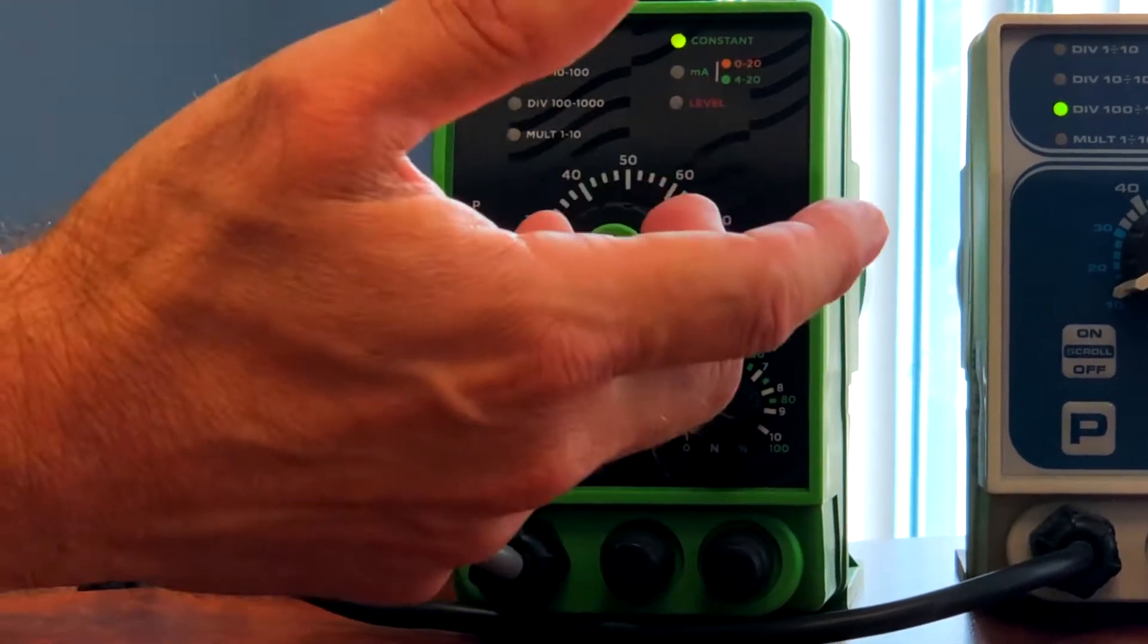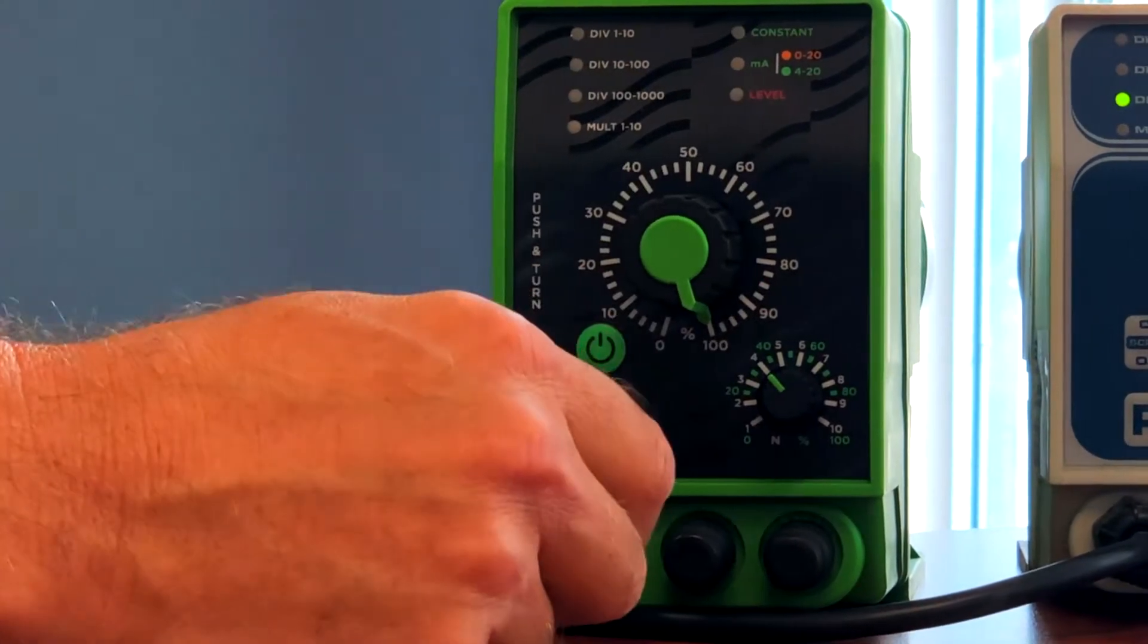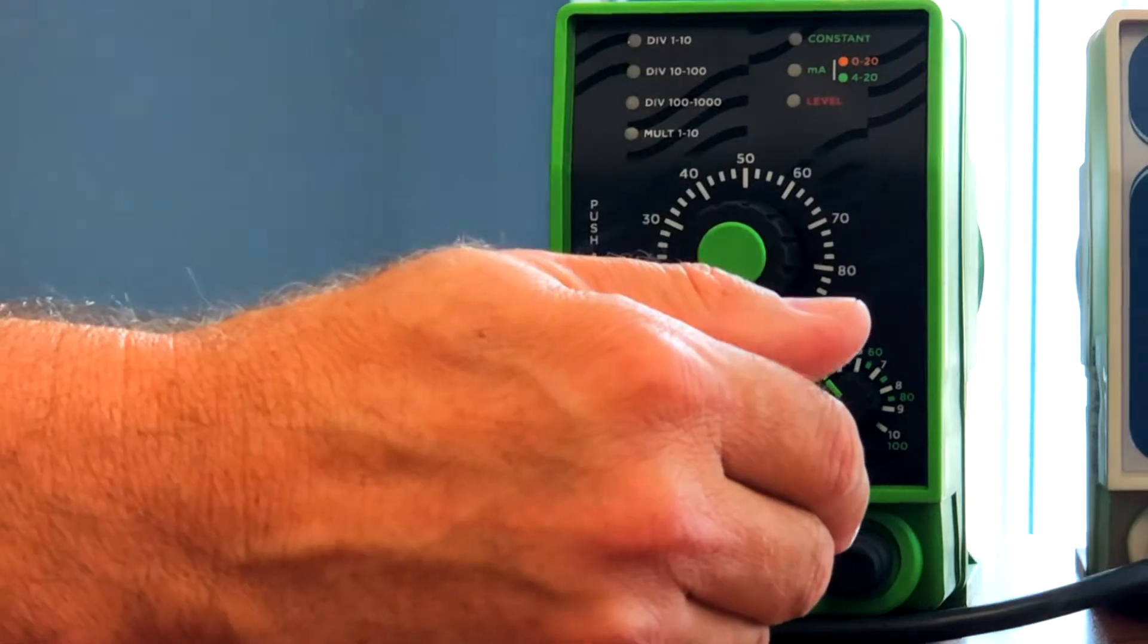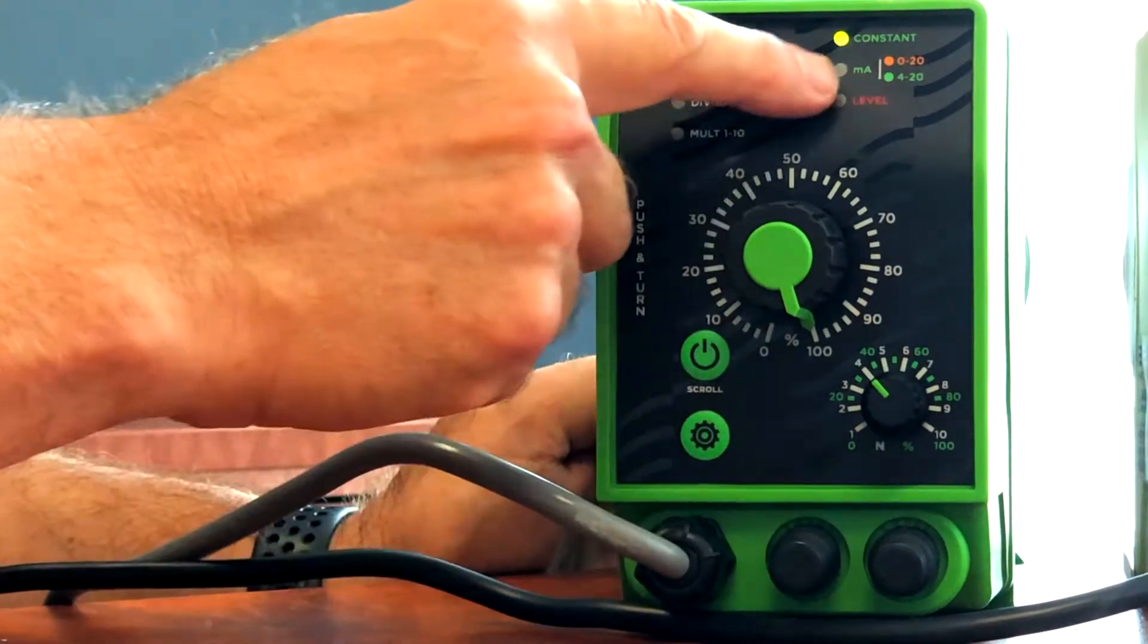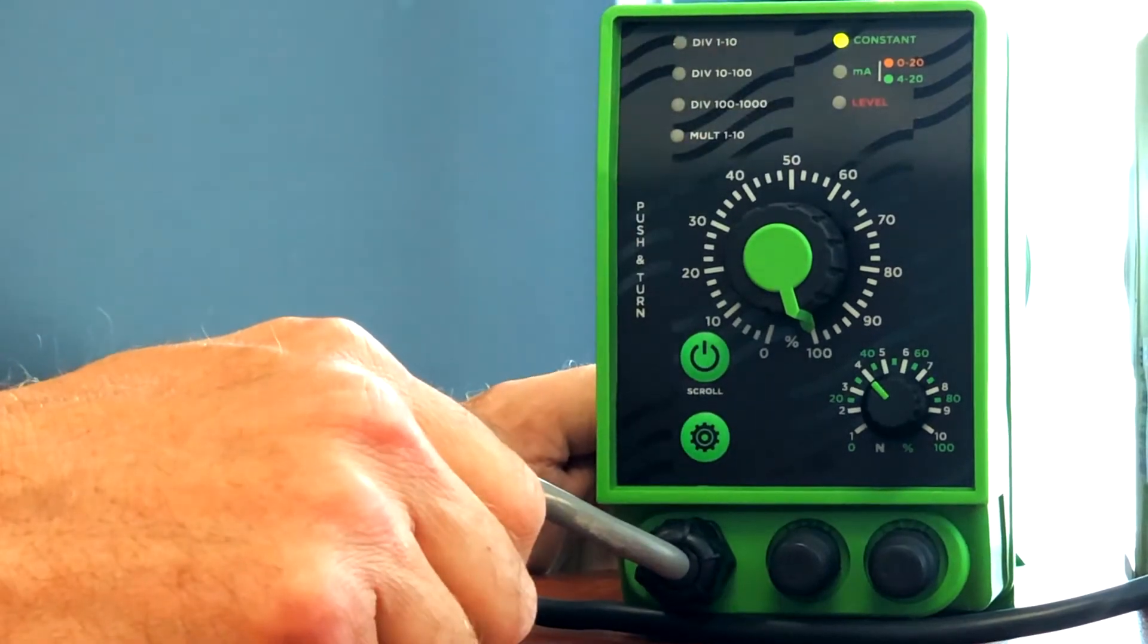However, you can interrupt it by pressing the button again, which puts it back into standby mode. And then to put it back into operation mode, press it again to turn it on, the LED goes on solid, and the pump carries on as per normal.